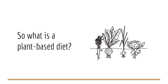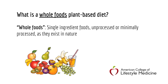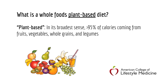So what exactly is a plant-based diet? The full term is a whole foods plant-based diet. Whole foods meaning single-ingredient foods, unprocessed or minimally processed as they exist in nature. Plant-based, in its broadest sense, means consuming at least 95% of our calories from fruits, vegetables, whole grains, and beans. Typically when working on reversing diabetes, we recommend going 100% until we start to see the results we're looking for. For a lot of people, complete abstinence is easier than perfect moderation when it comes to a plant-based diet.